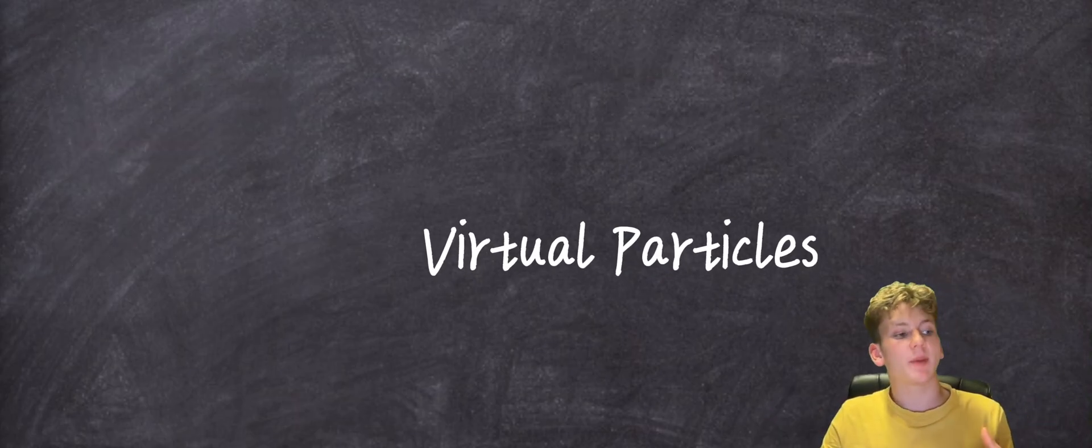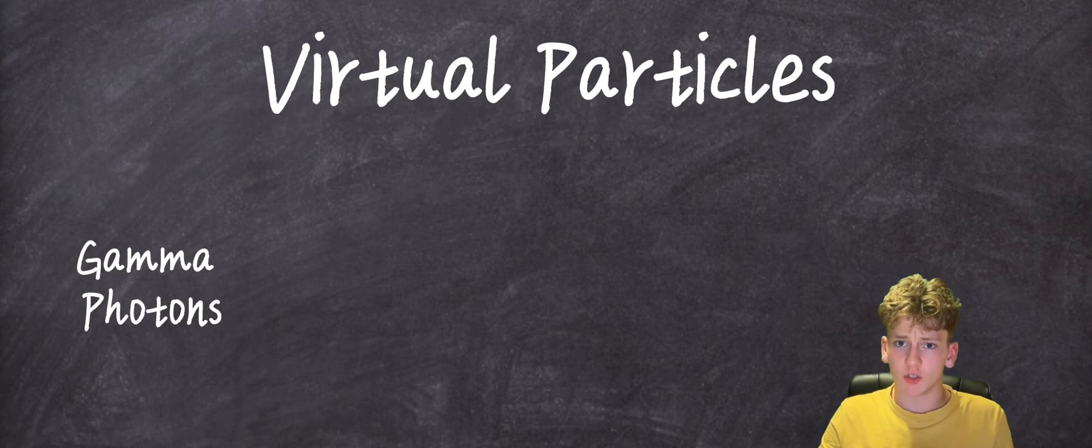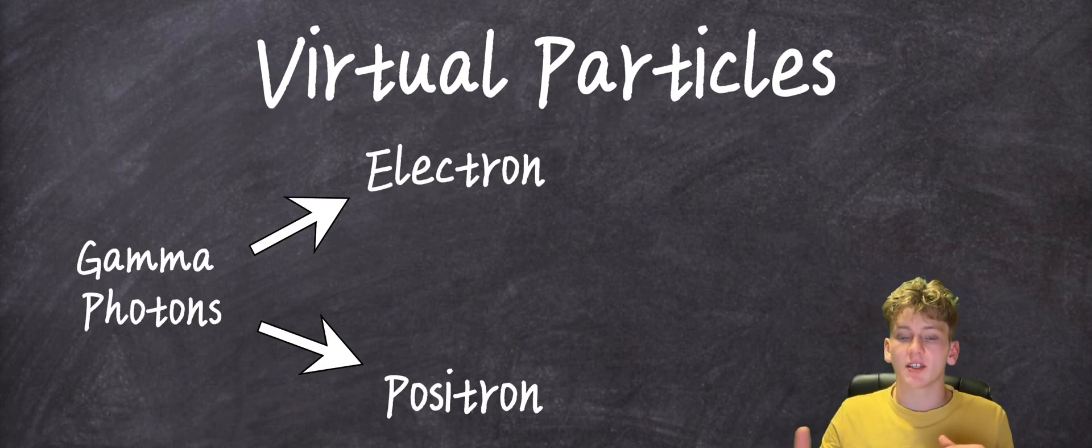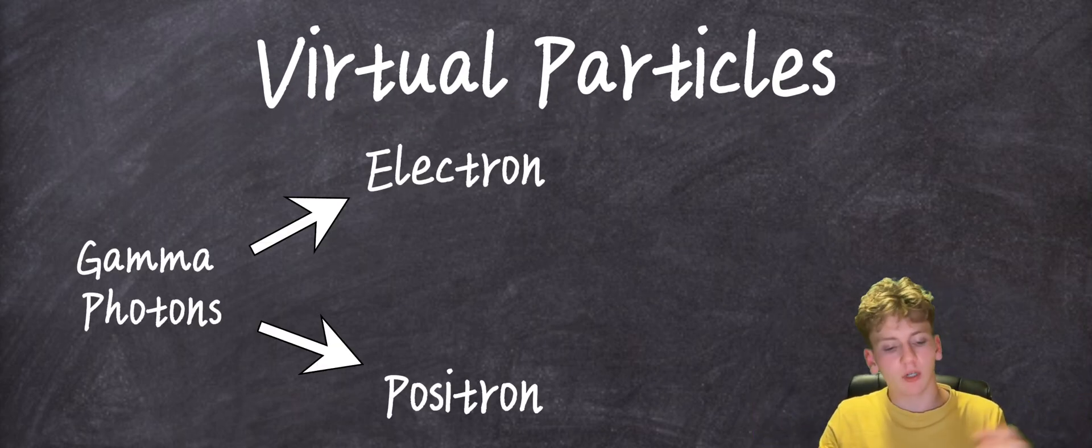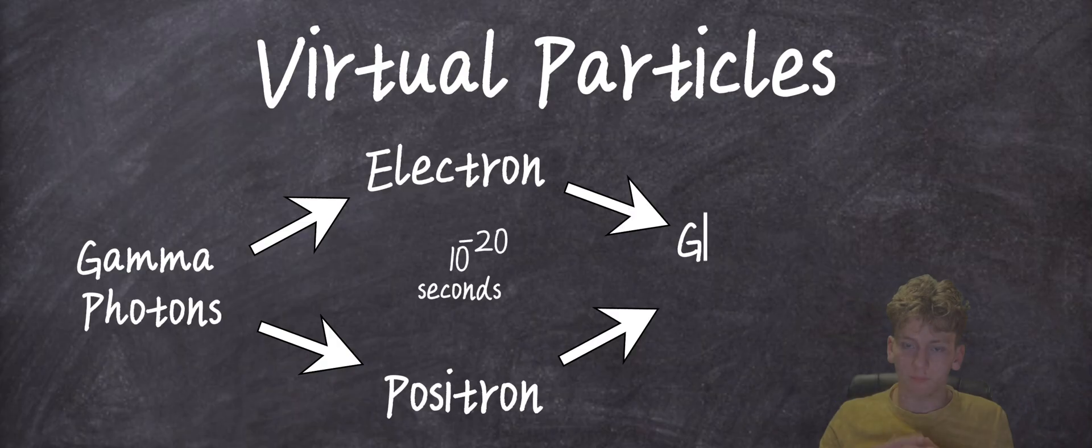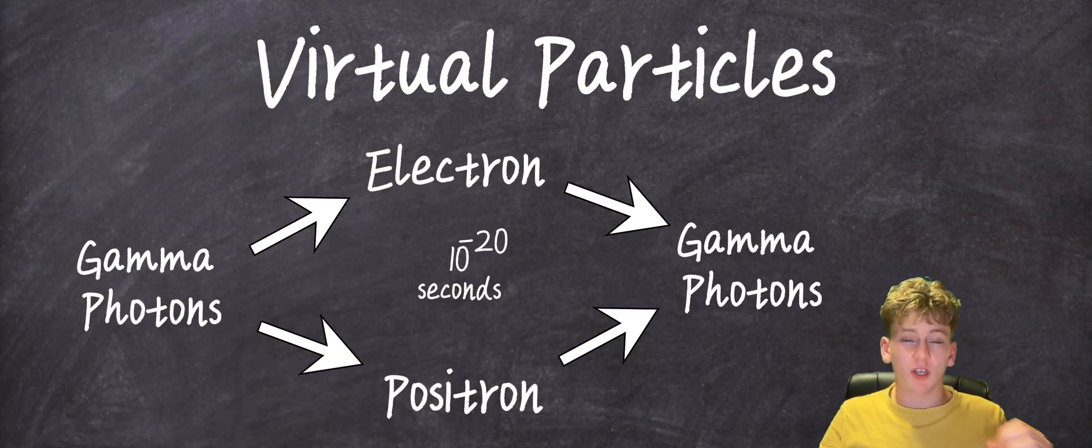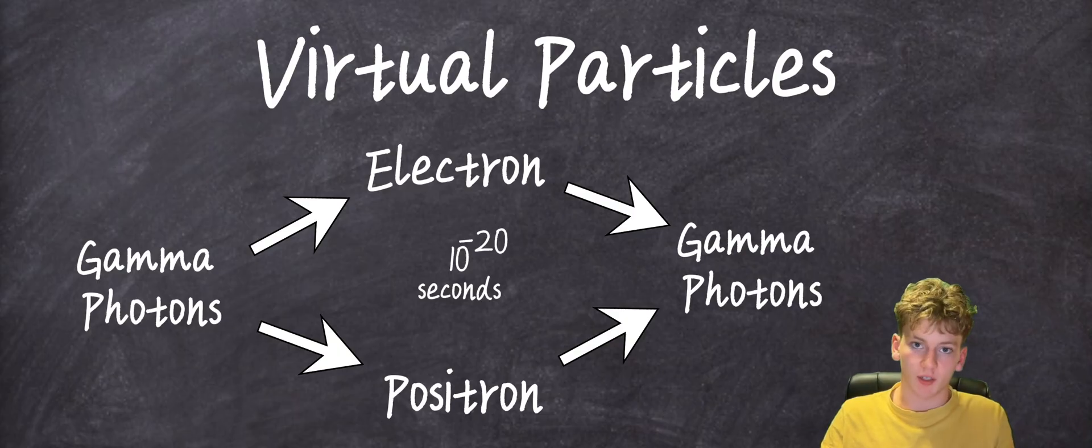Simply put, empty space is never truly empty. It's a boiling pot of virtual particles which pop into existence as antimatter pairs, for example, a positron and an electron. They exist for about 10 to the minus 20 seconds and then annihilate with one another. Even though this does violate the conservation of energy, it does so over a minute time frame and with a minute amount of energy. And so, the universe can go into a kind of energy debt in order to create these particles, and it then pays this back when they're annihilated.